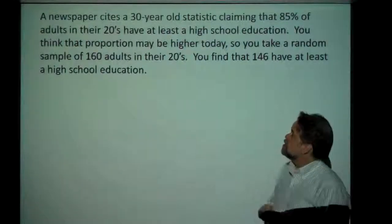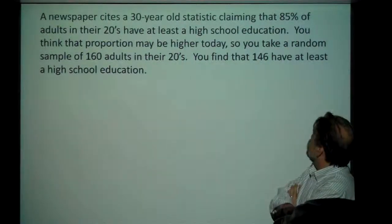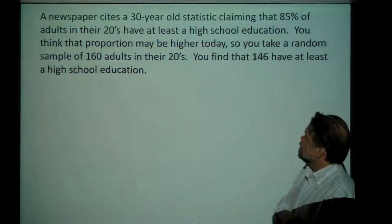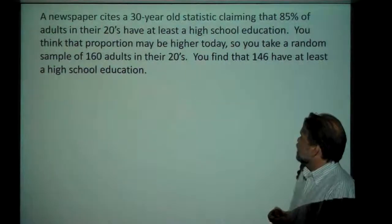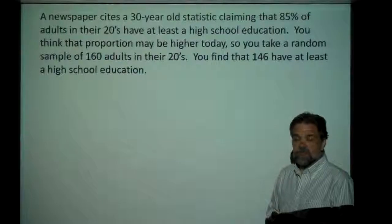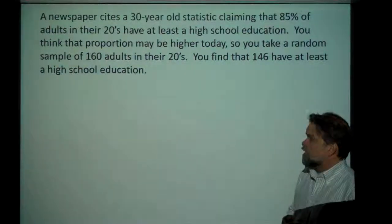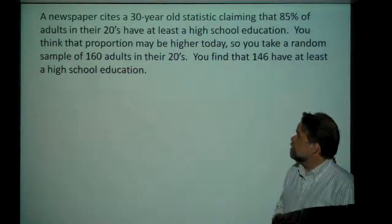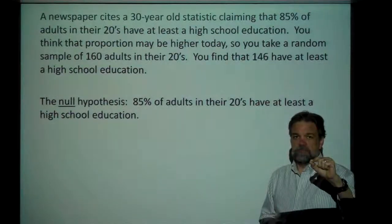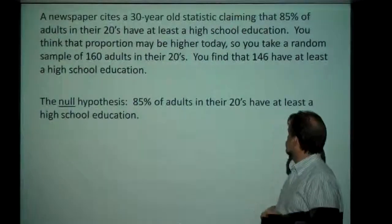Let's look at an example. A newspaper cites a 30-year-old statistic claiming that 85% of adults in their 20s have at least a high school education. You look at that and think, hmm, that seems low — I thought it would be higher than that. Because you think that proportion may be higher, you go out and take a random sample of 160 adults in their 20s. What you find is 146 of them have at least a high school education. First, we state our hypotheses — that's the very first thing you do. The null hypothesis is: 85% of adults in their 20s have at least a high school education.